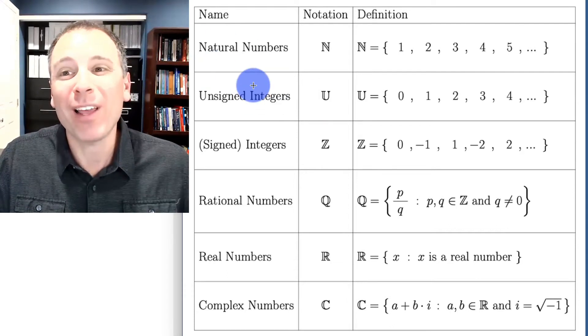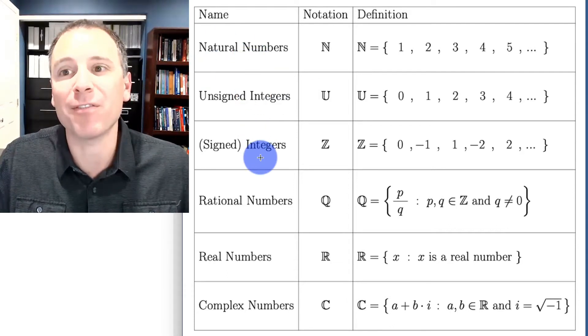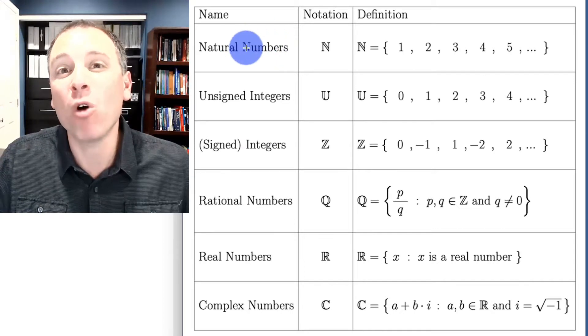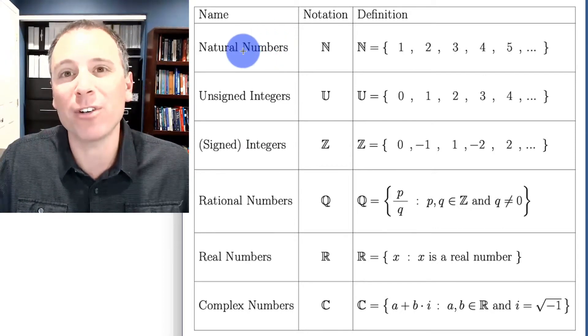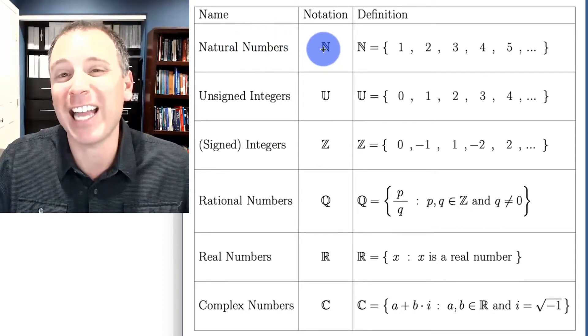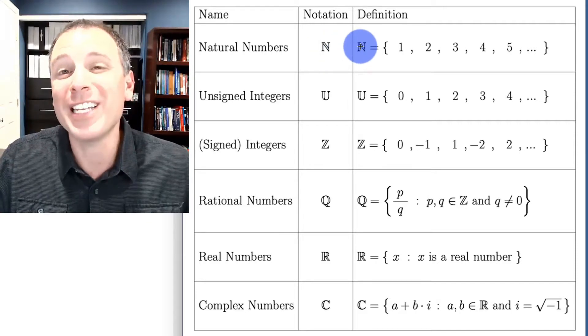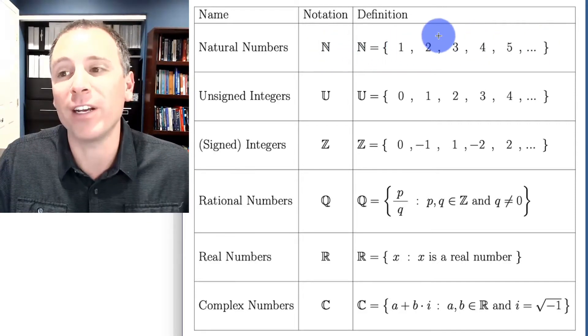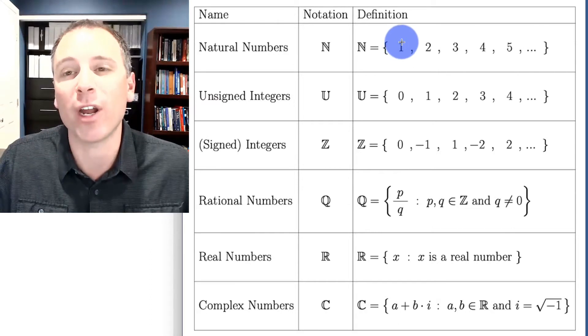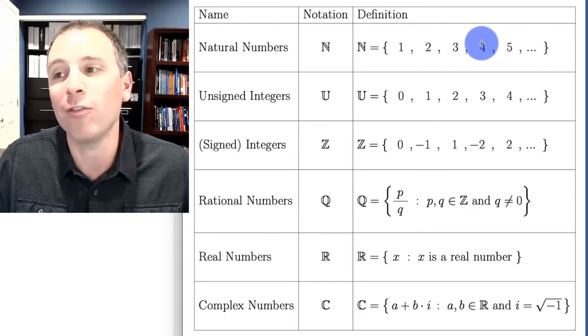In math we actually have a bunch of different ways to write popular sets of numbers. Generally the most basic is called the natural numbers, but in the United States and in fact anywhere that's not France, we say that natural numbers start at 1 and go up to infinity. So these are the counting numbers that start at 1, 2, 3, 4, 5.